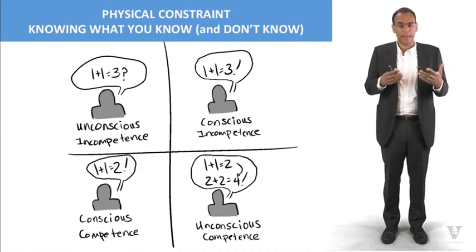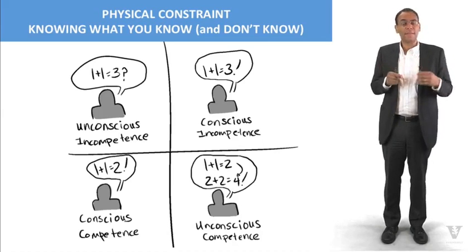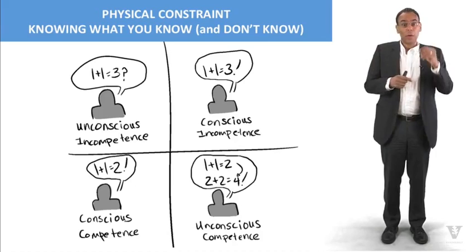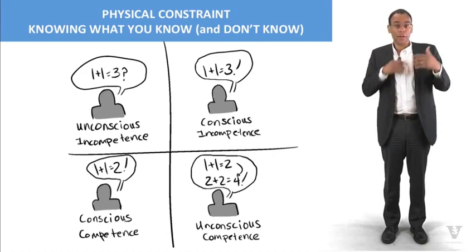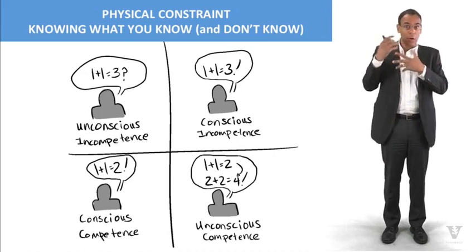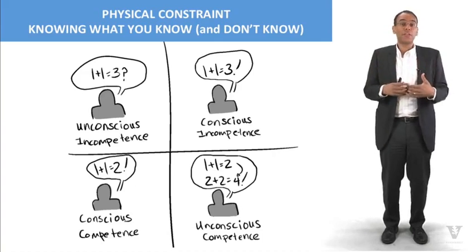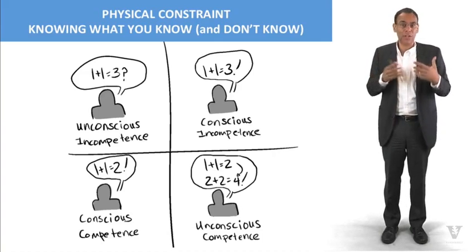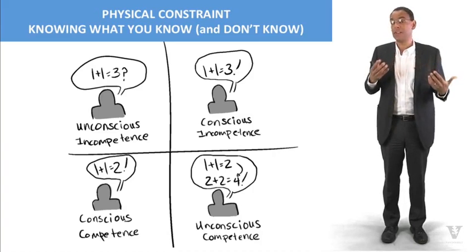Unconscious incompetence is when we don't know we don't know something. Then we generally move to a state of conscious incompetence, where we know what we don't know but we still don't know it. We move then to conscious competence, where we know what we know and we know how to do the things we need to know. And then unconscious competence, where we're able to do things, we're competent, but we don't know why or how we do it.